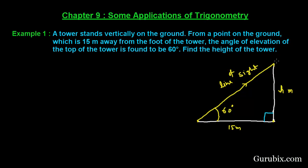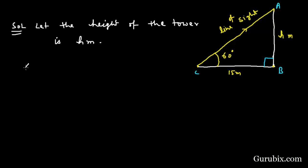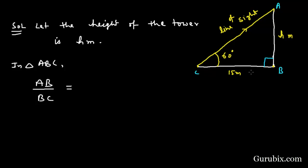Let this triangle be named ABC. Let the height of the tower be h meters. Therefore, in triangle ABC, we shall find the ratio of the side to be found over the side which is given. In triangle ABC, this is a right-angle triangle. We are required to find side AB. Side BC is given. We observe that AB is the side opposite to the given angle, and BC is the side adjacent to the given angle.